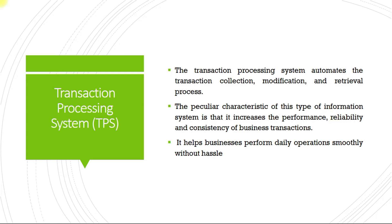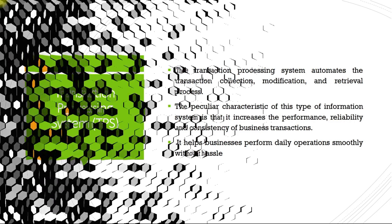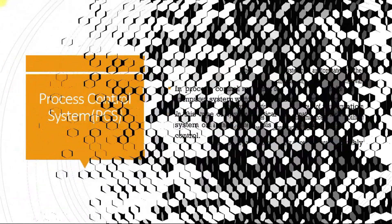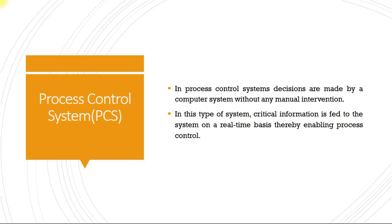Process control system, shortly known as PCS: decisions are made by the computer system without any manual intervention. In this type of system, critical information is fed to the system on a real-time basis, thereby enabling process control.